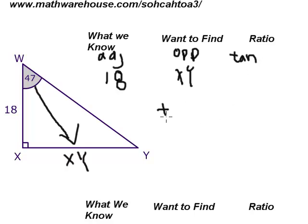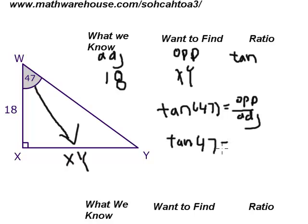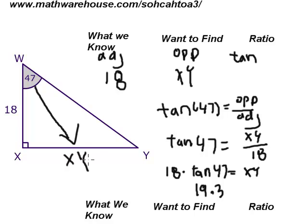So, that's what we're going to set up. Our equation is that the tangent of 47. Remember SOHCAHTOA. Tangent equals opposite over adjacent. Or tan of 47 equals XY over 18. So, XY just equals, if we cross multiply, 18 times tan of 47. And if you punch that into your calculator, 18 times tan of 47 gives you 19.3. So, that is the length of XY.